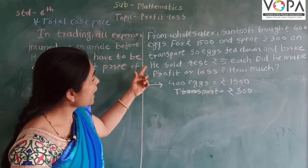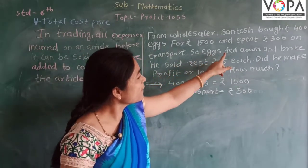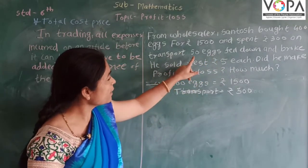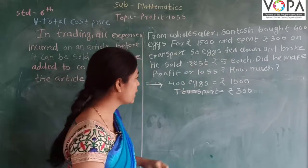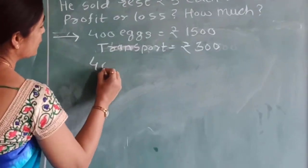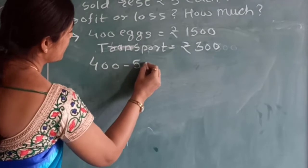But in the next line, 50 eggs, look at here, 50 eggs fell down. Therefore, only 350 eggs are remaining.